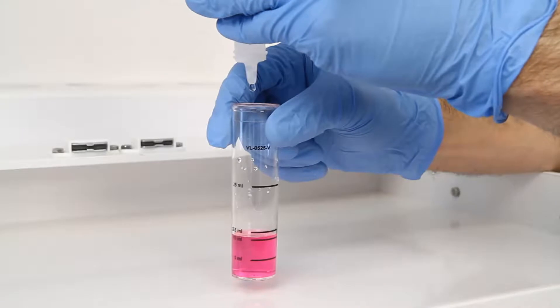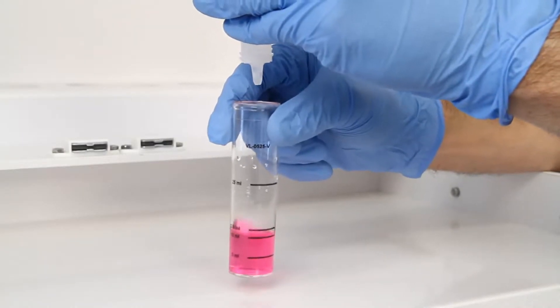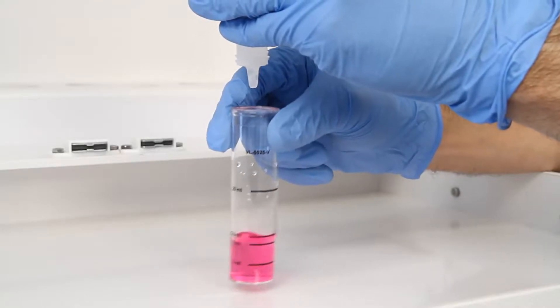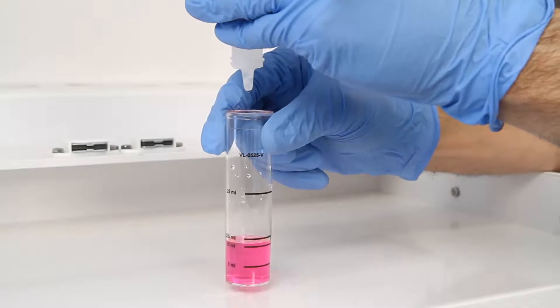The bottle contains a dropper tip, so it's important to hold the bottle vertically to get a consistent drop size. After the addition of each drop of titrant, swirl the vial to make sure the sample is properly mixed. Count the number of drops during this step.